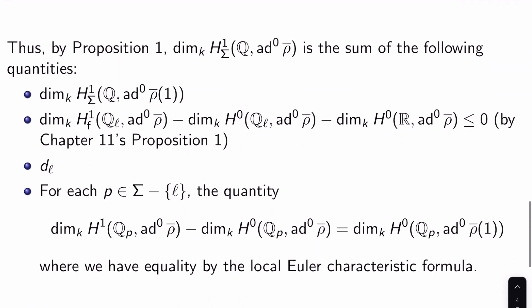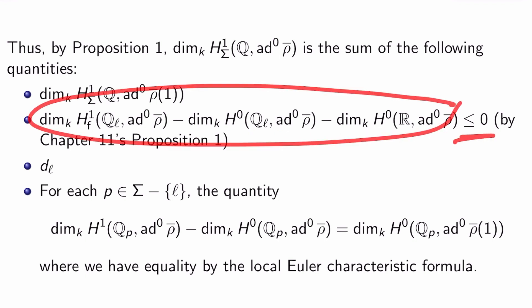So by Proposition 1 from the last video, dim_k H^1_Σ(Q, ad^0 ρ̄) is the sum of the following quantities. And I'll let you go back and do this little exercise. It's fun. Dim_k H^1_Σ(Q, ad^0 ρ̄(1)).